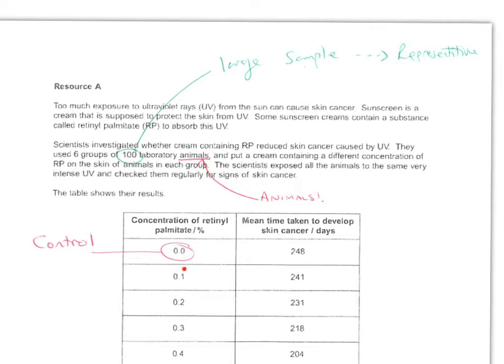Another question is what was the purpose of the 0.0%? So that is acting as a control so there's no retinal palmitate whatsoever. They'd have had to use the same volume of water as what they used for the retinal palmitate and treated the experiment exactly the same.